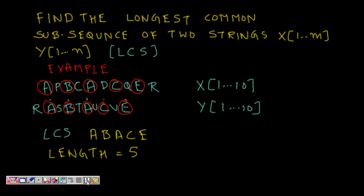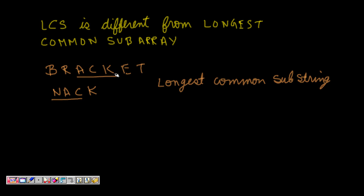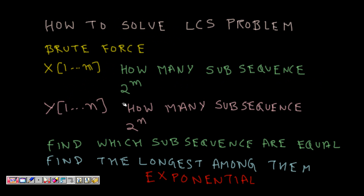For the longest common substring, the letters must be consecutive. For example, take 'bracket' and 'knack': the subarray a c k appears in both, and it is the longest common subarray. But this is not the same as the longest common subsequence.